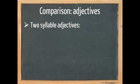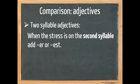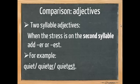Now it is a little bit trickier when it comes to two syllable adjectives. When the stress is on the second syllable, we add -er or -est to the adjective. For example, quiet, quieter, quietest. The stress in quiet is on the final syllable, quiet. So we add -er and -est. Quiet, quieter, quietest.